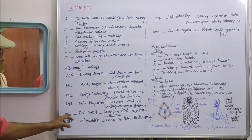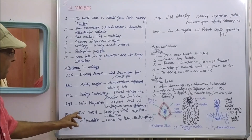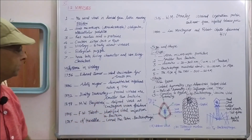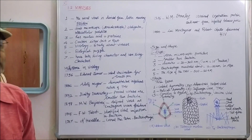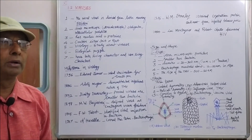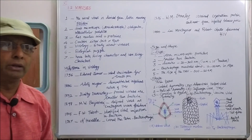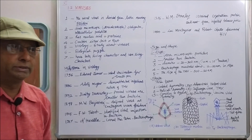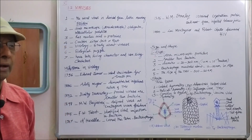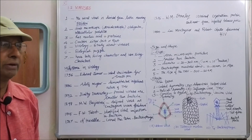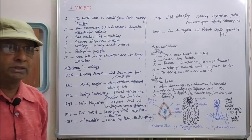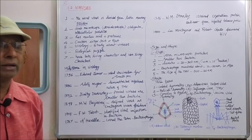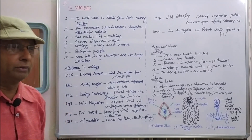In the year 1915, F.W. Twort identified viral infection in bacteria. Bacteria cause disease to plants, animals, and human beings; but viruses can cause disease even to bacteria. The viruses which cause disease to and attack bacteria are called bacteriophages.